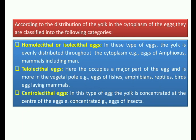To summarize types of eggs: based on amount of yolk — microlecithal, mesolecithal, and megalecithal. Based on distribution of yolk — homolecithal, telolecithal, and centrolecithal. That covers the different types of eggs.